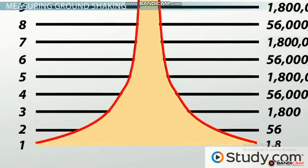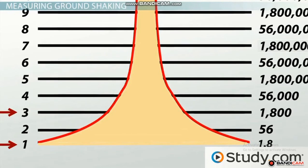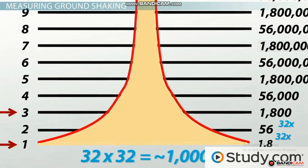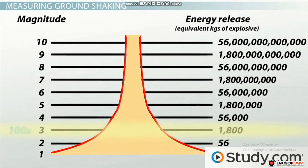Take our example from before: a magnitude one and a magnitude two quake. The magnitude two quake will have 32 times more energy than the magnitude one earthquake. Now let's compare our magnitude one and magnitude three quakes. The magnitude three quake is two steps up the Richter Scale, so we have 32 times more energy for the first step, and then 32 times more than that for the second step. 32 times 32 gives us about a thousand times the energy with just two steps up the scale. This is even more amazing when you compare it with the difference in ground shaking: a magnitude three earthquake has a hundred times more ground shaking than a magnitude one quake, but about a thousand times the energy.